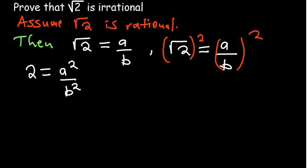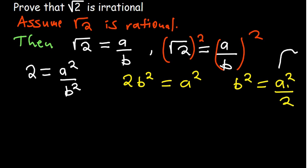So we can cross and multiply. So 2B squared is equal to A squared, and then we can divide both sides by 2. So B squared is going to be equal to A squared over 2. So you observe one thing. What are we observing? We're observing that A squared is divisible by 2.